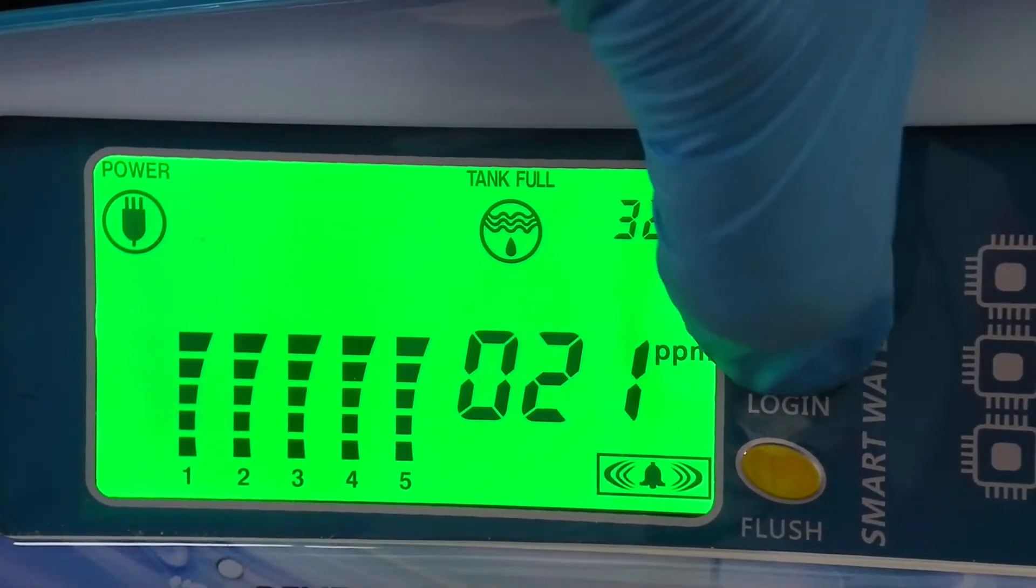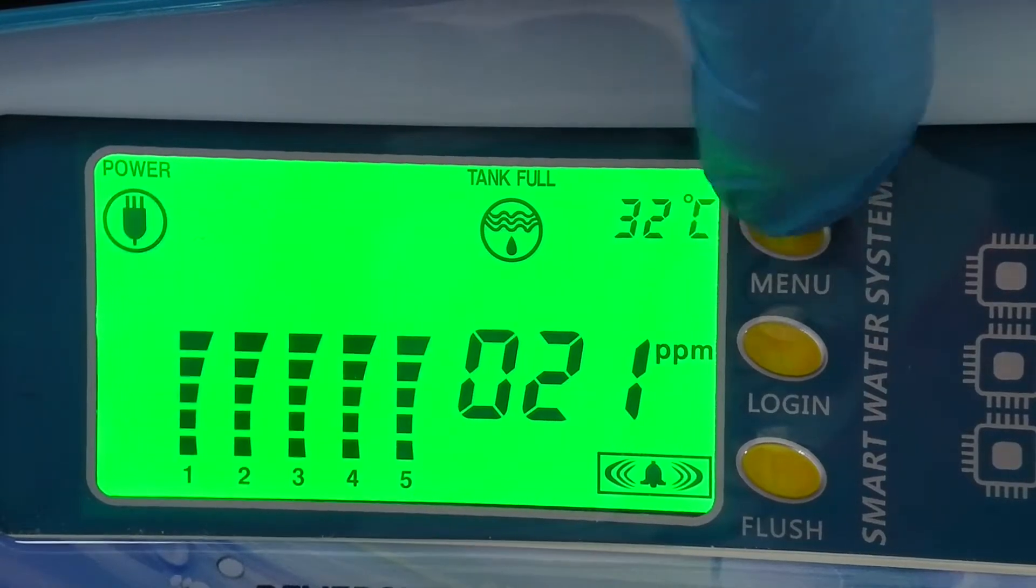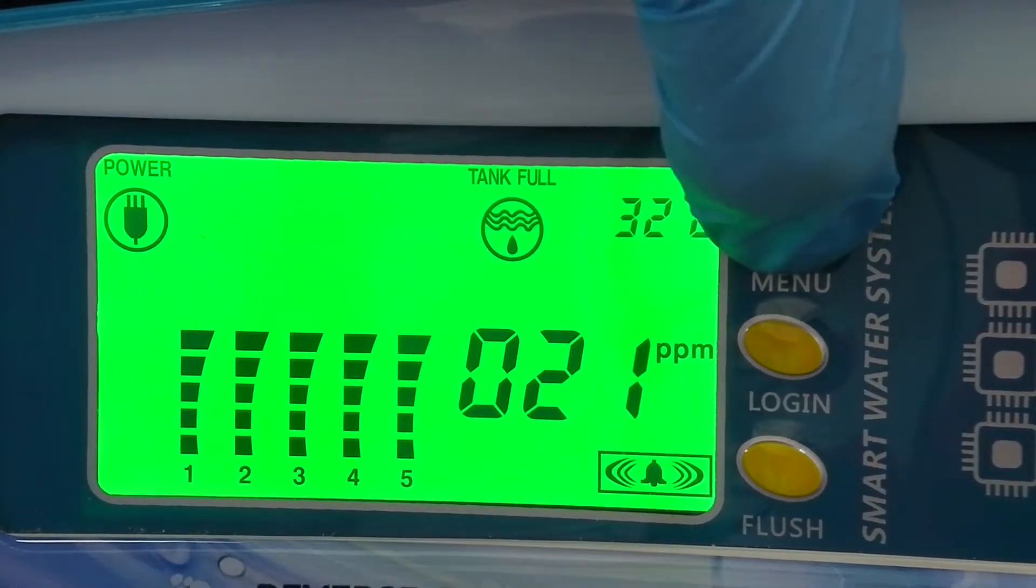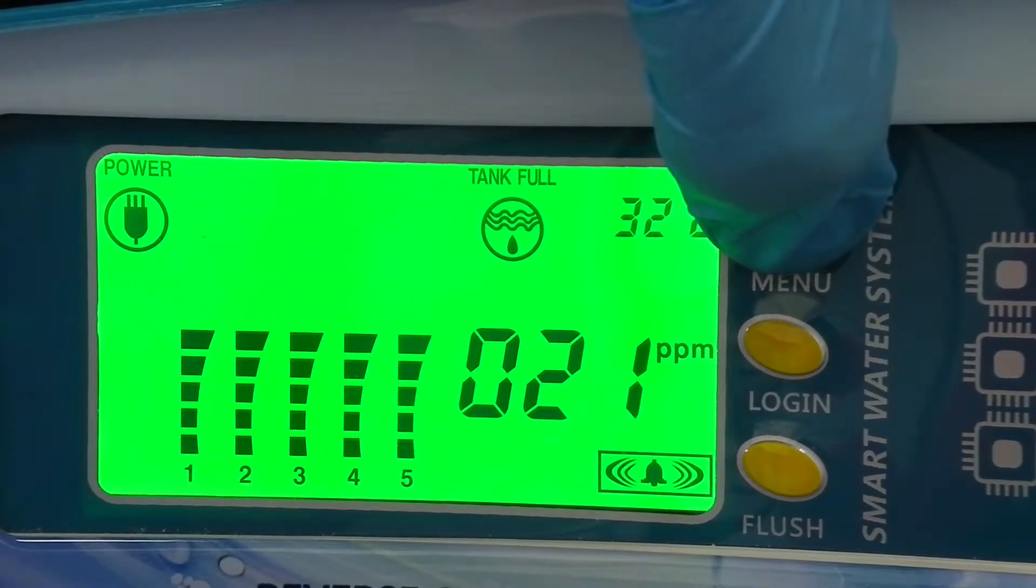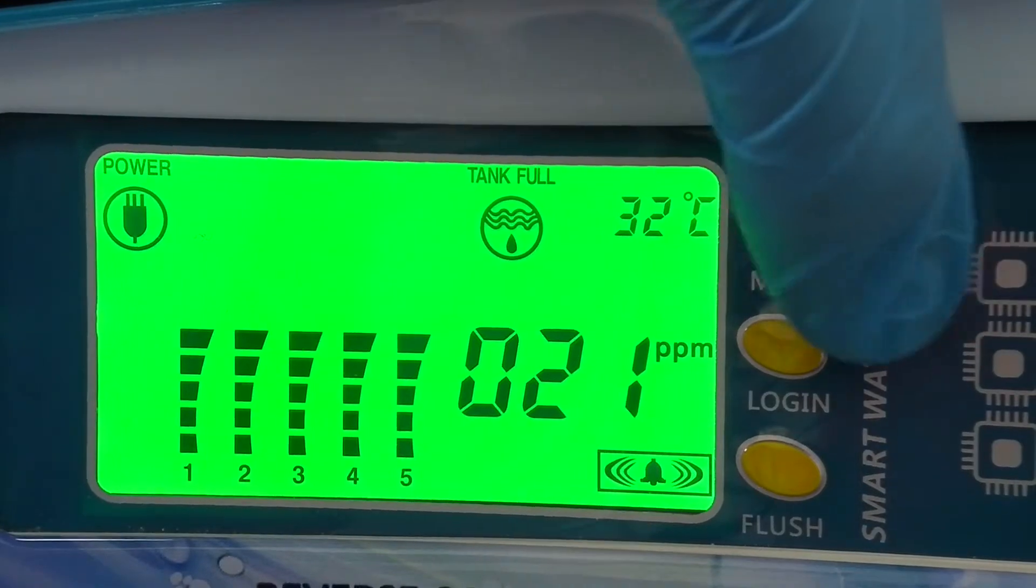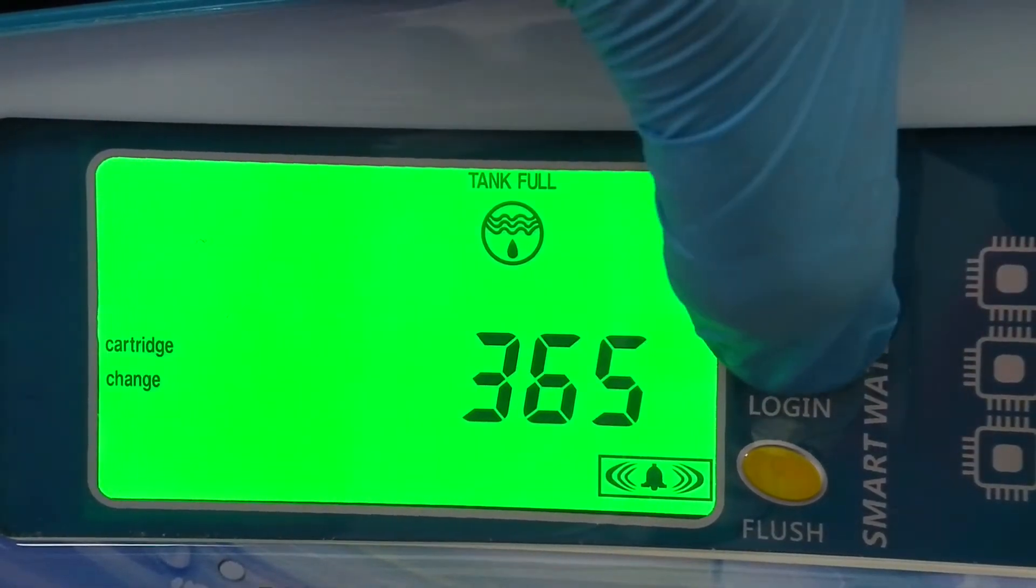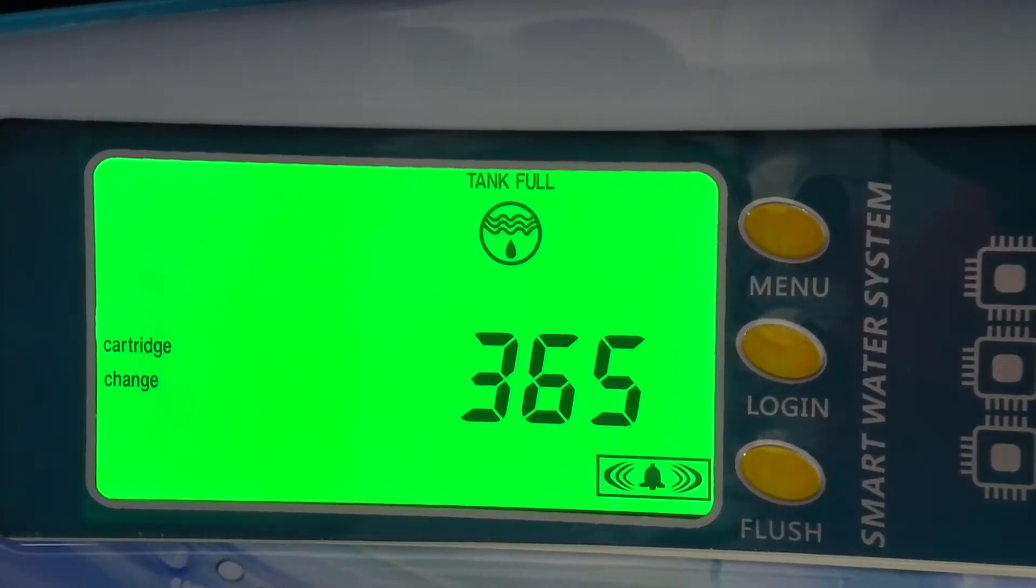After the annual filter change, we need to reset the filter lifetime. In order to do that, press and hold the menu button until you hear the beep. To check if filter reset was successful, press the login button, which should now display 365.